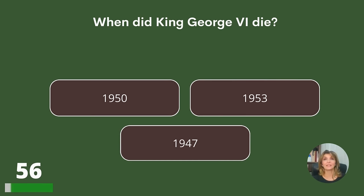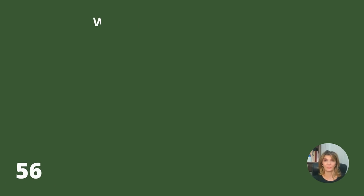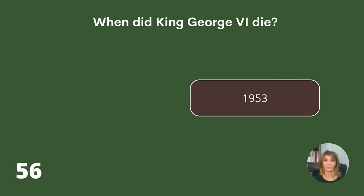When did King George VI die? 1950, 1953, or 1947? Answer: 1953.